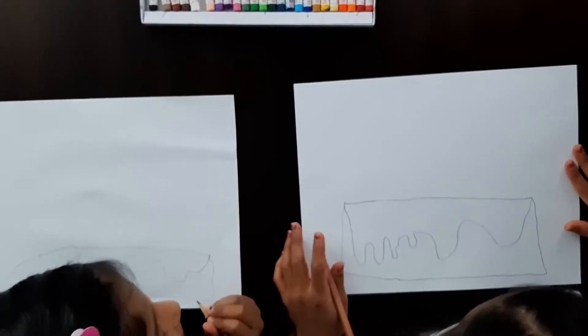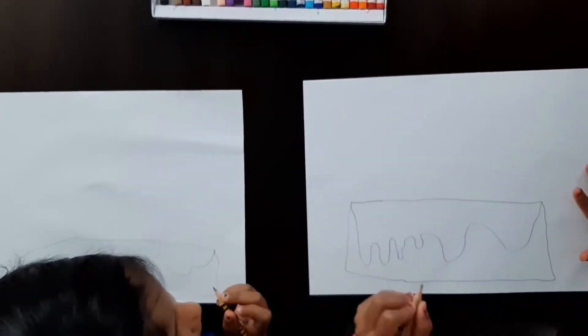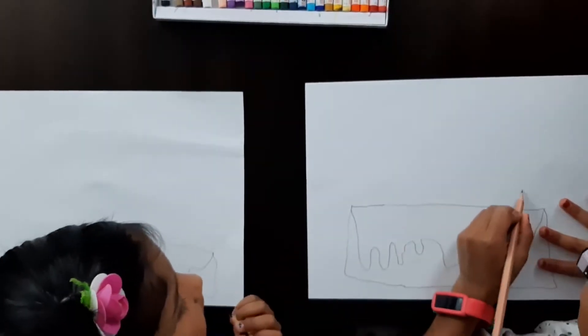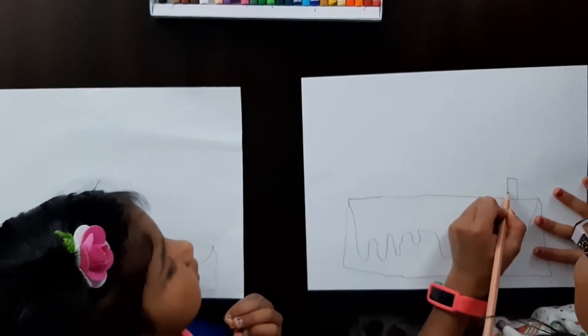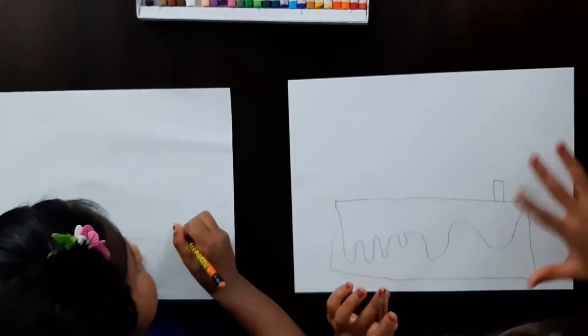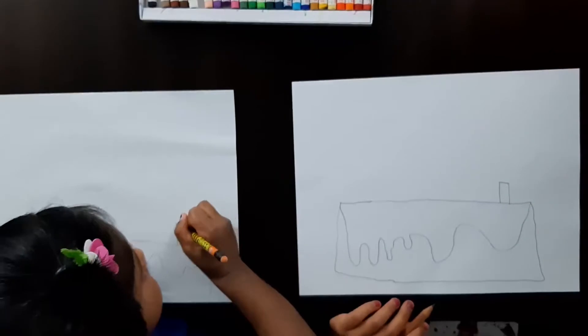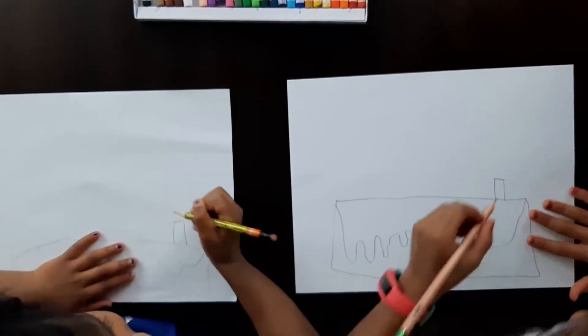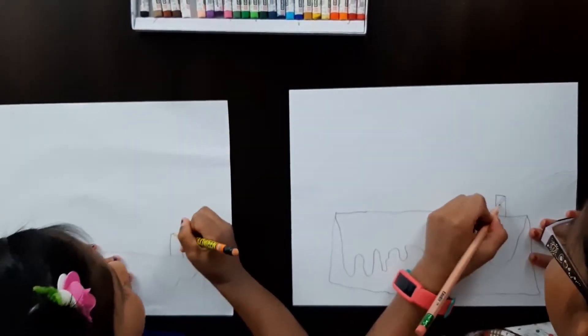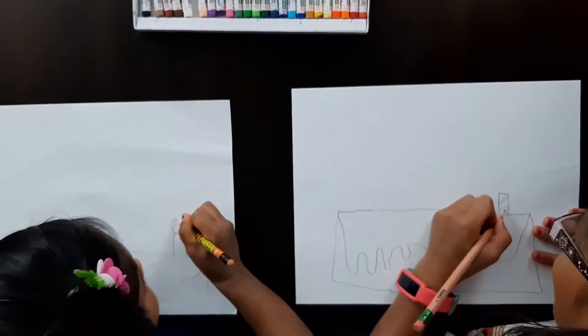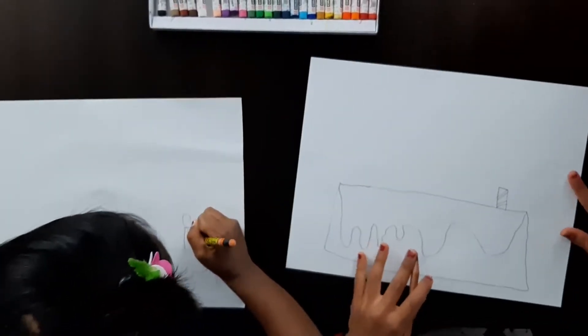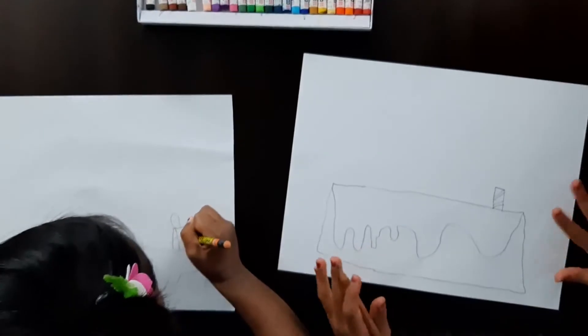So the next step is, we are going to add a candle. Just add a small rectangle. Then I'll tell you what to do. Now you're going to draw just lines, any kind of design you want on the candle. Cool design.